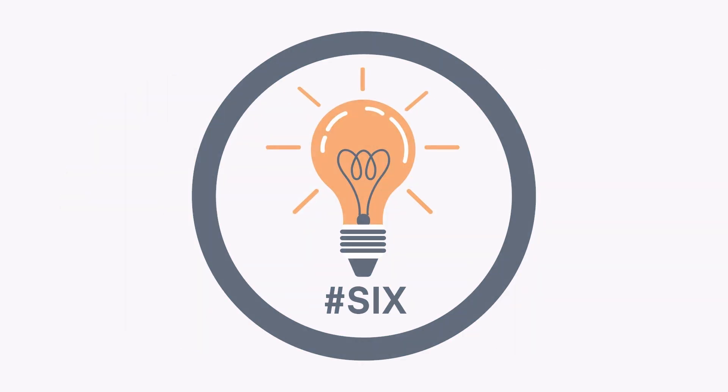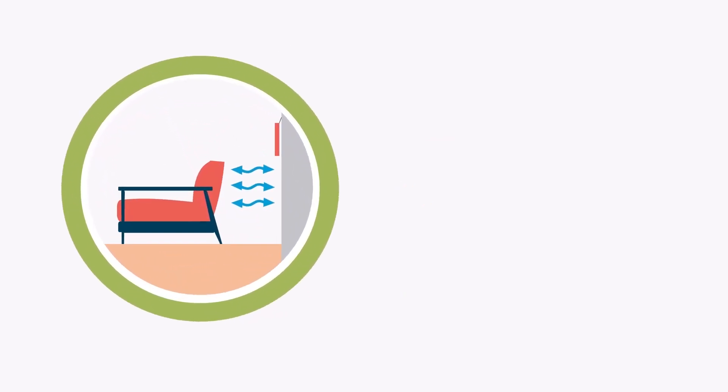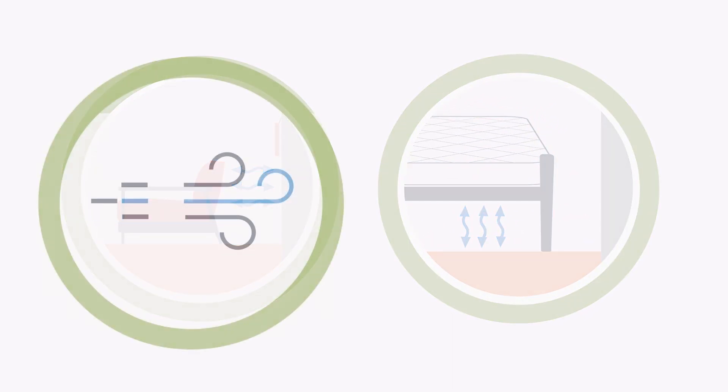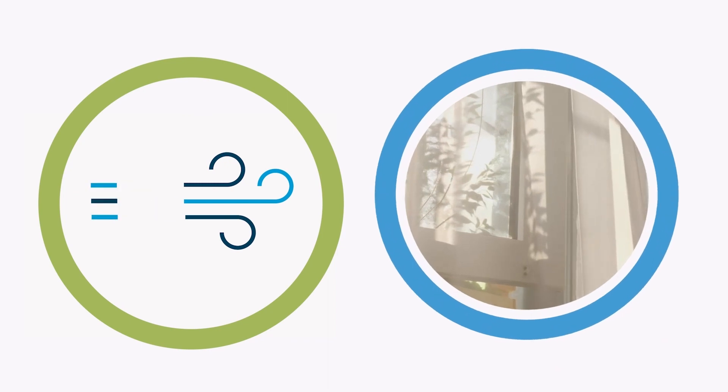Tip number six. Make sure there's a gap between your furniture and external walls and avoid putting your mattress directly on the floor. When air can move around freely, it will help stop mold growing in your home.